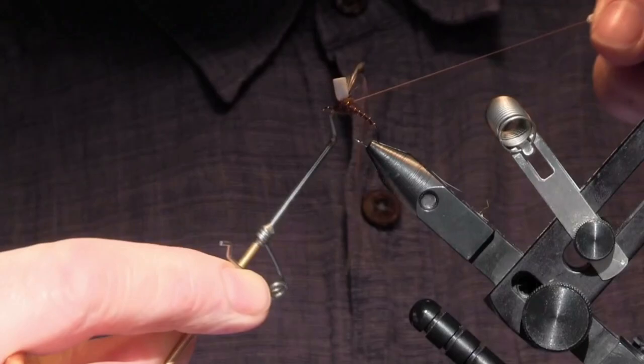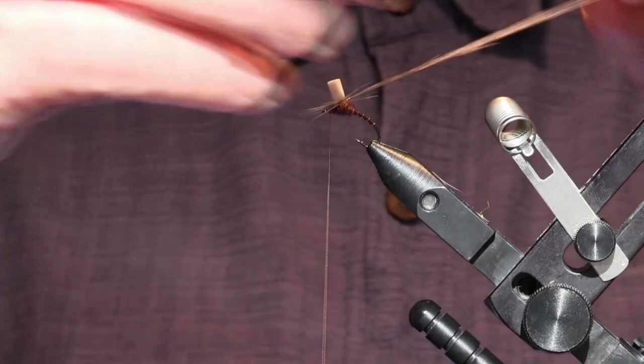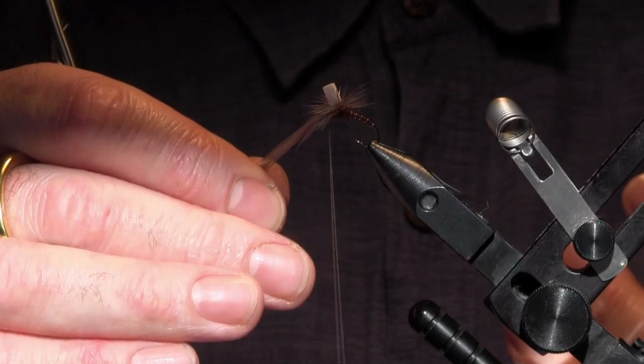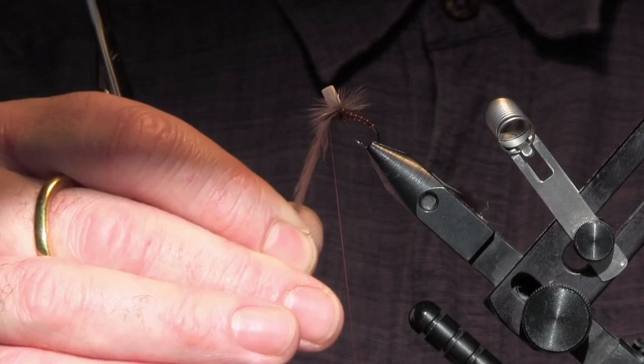Now we're going to take our hackle feather, pull it perpendicular to the post, and start wrapping down. Three, four, five—looks about right. A lot of books will say three wraps of this or two wraps of that, but I like to wrap until I feel good about how it looks. This took about four or five wraps.